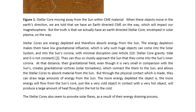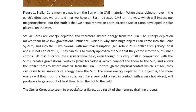At that distance, their gravitational field, even though it is very small in comparison with the sun's, creates gravitational vortices or solar tornadoes, which connect them to the sun and allow the stellar cores to absorb material from the sun. Through the physical contact which is made, they can draw large amounts of energy from the sun. The more energy depleted the object is, the more energy will flow from the sun's core — just like a very cold object in contact with a very hot object will produce a large amount of heat flow from the hot to the cold.